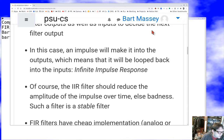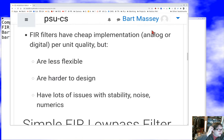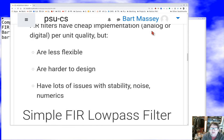In principle, if signals weren't quantized in amplitude as well as time, if we look out far enough into the future we would still see some tiny trace of that original impulse: infinite impulse response. IIR filters have a cheap implementation per unit quality, but they're less flexible, harder to design, and have lots of issues with stability, noise, numerics, etc.